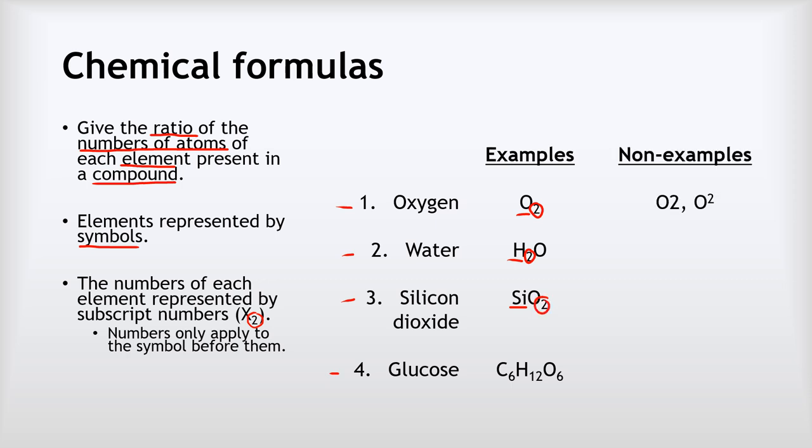And the numbers are always subscript. Now this is where people go most wrong with these. So let's look at some non-examples. For oxygen, look at that subscript 2. We're not going to have a large 2, we're not going to have a superscript 2. For water, H2O, again, not a large 2, not a superscript 2. Silicon dioxide, again, SiO2 keep it subscript. We don't want a large one, we don't want a superscript 2. Glucose, C6H12O6. Again, look at all these nice subscript numbers. We don't want this with large numbers, and we don't want this with superscript numbers. If you draw them superscript or large, you will not get the mark in the exam.